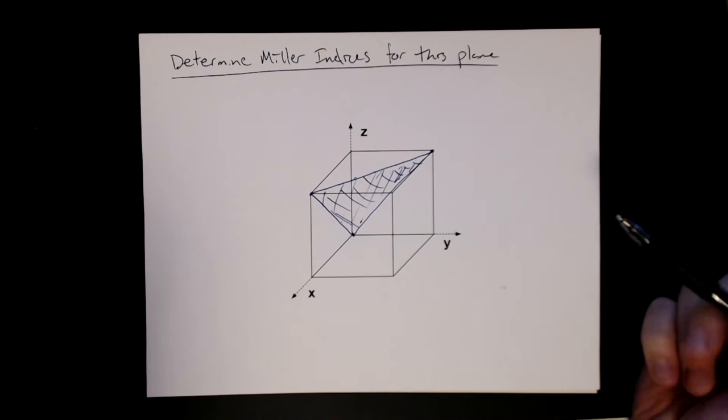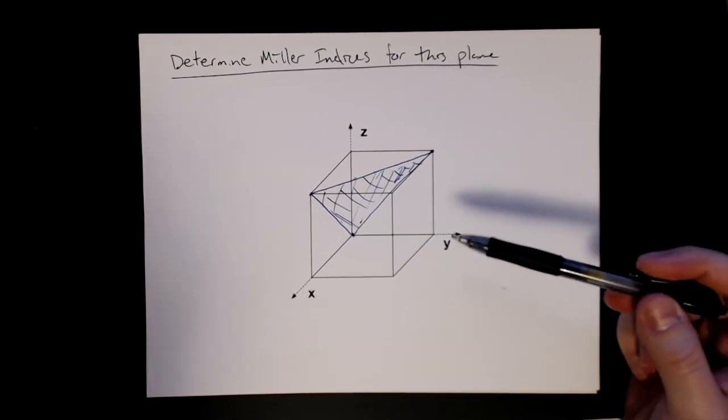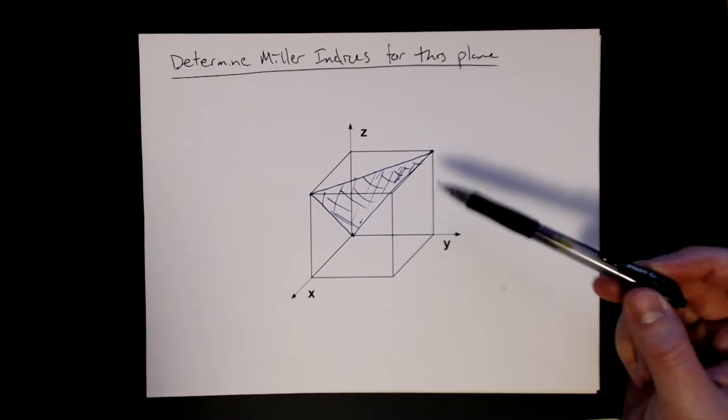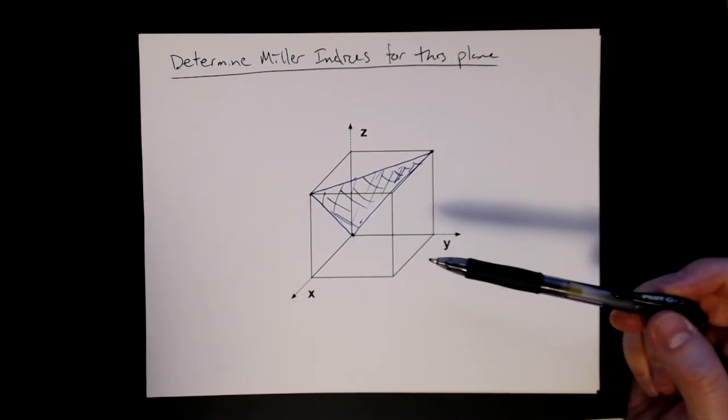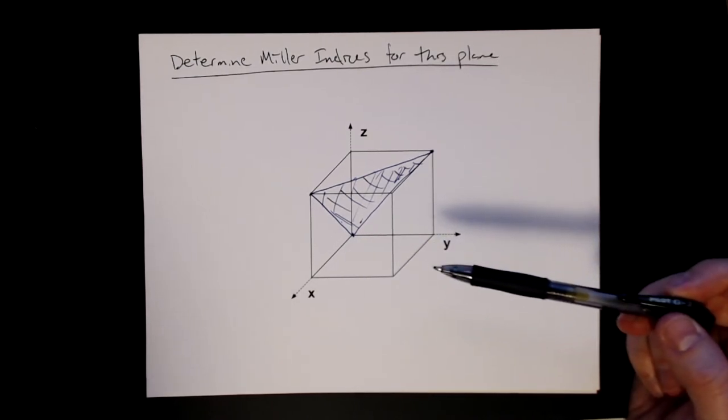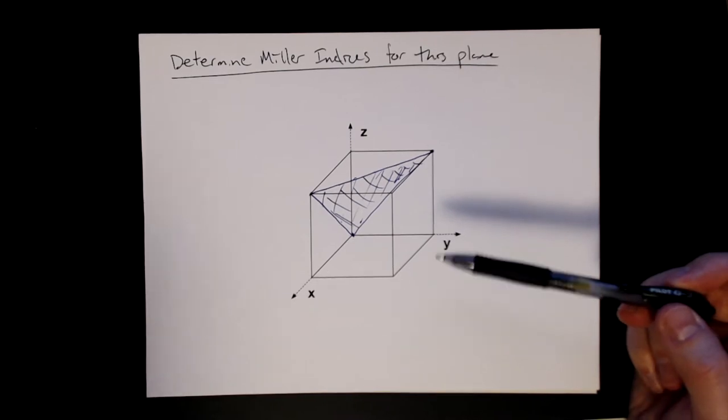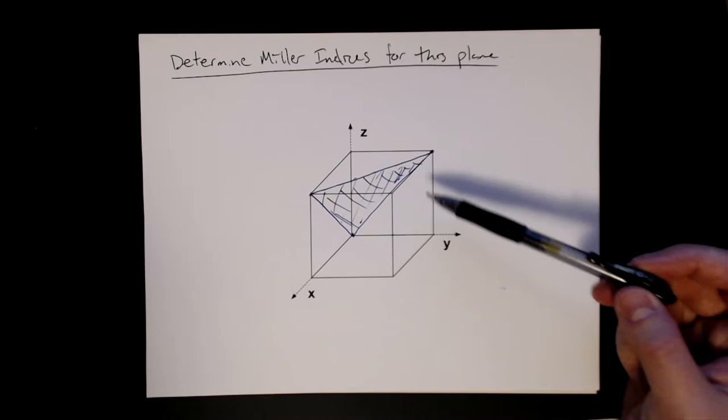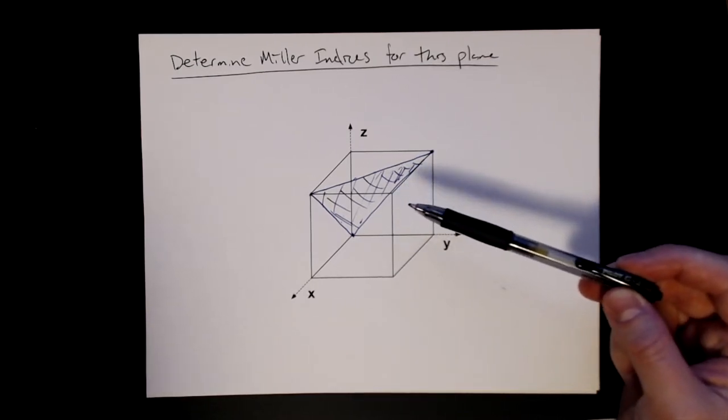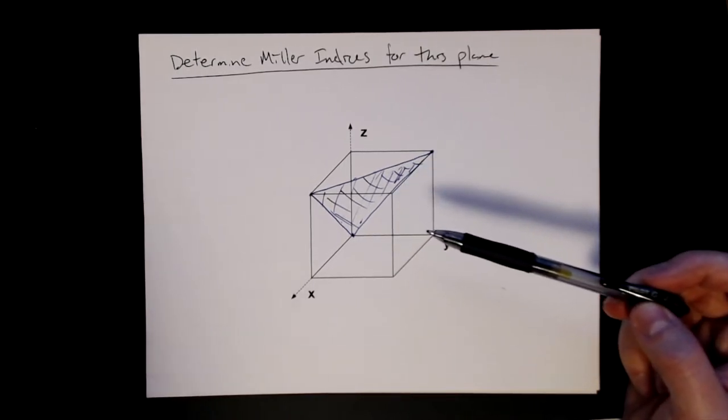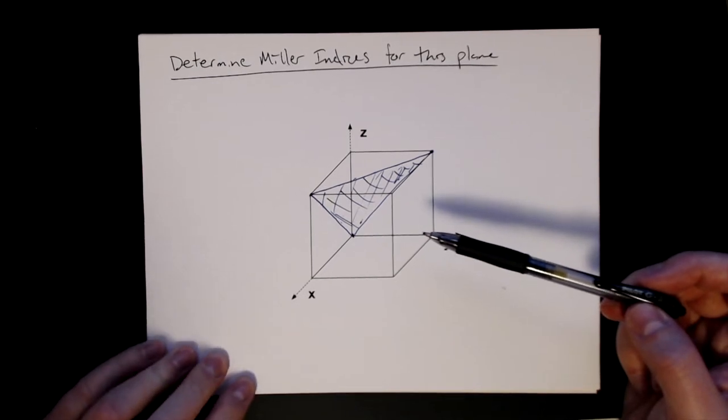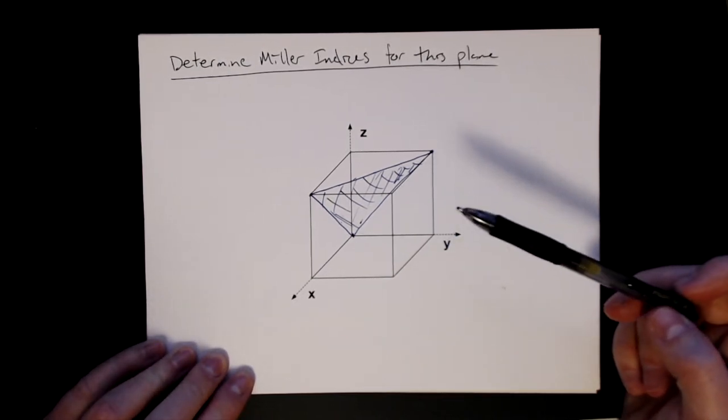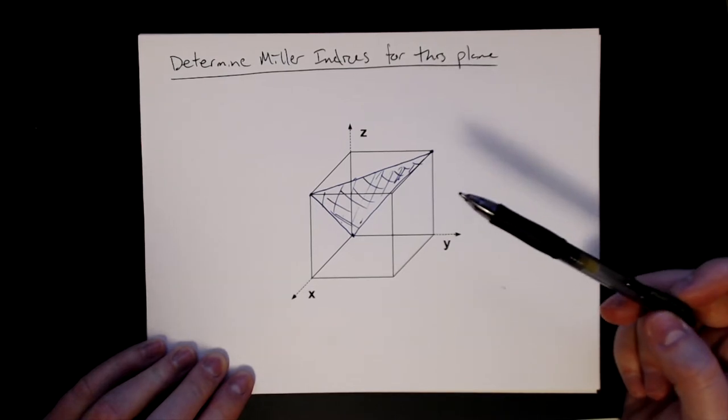All right, so let's go through this example. Here I've cheated. Instead of trying to hand draw these unit cells again, I printed them off, and I highly recommend that for you as well if you have access to a printer. That way you don't have to sketch the unit cell each time. But I've also sketched in the plane, and this is the same one in the slide, so you can go back if you need a better view of it. Let's go through the procedure of how we determine the Miller indices for this particular plane.